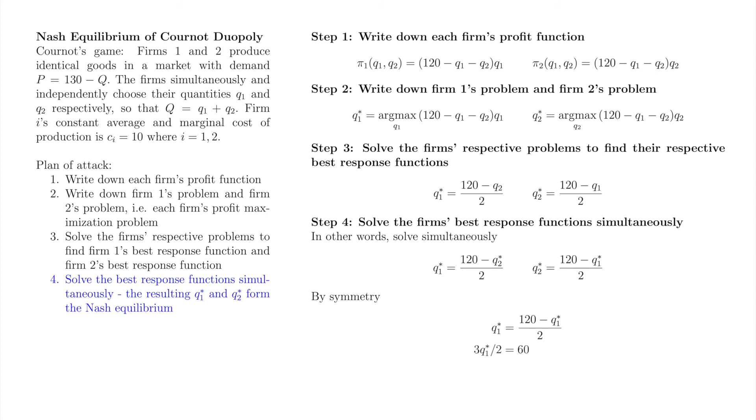With some algebra, we find q1 star is equal to 40. Symmetry tells us q2 star is also equal to 40. The Nash equilibrium of our Cournot duopoly is q1 star equals 40 and q2 star equals 40.